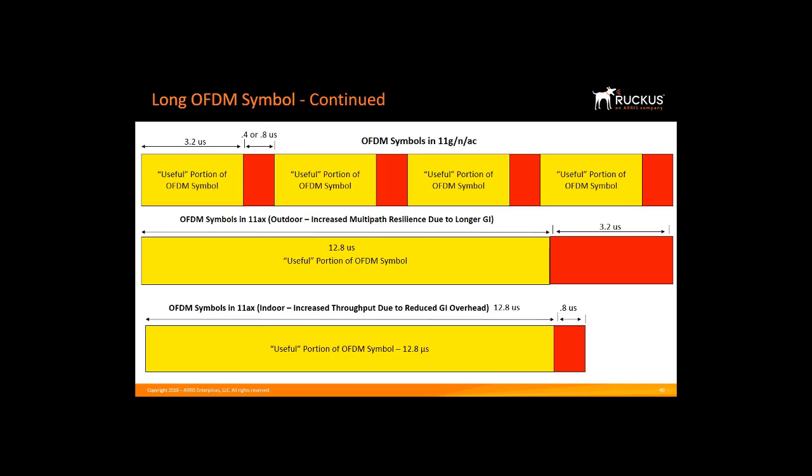Our 11AX APs will adjust this automatically. The guard interval depends on the environment the AP is installed in. Our APs optimize numerous parameters: BeamFlex Plus will try to maximize throughput first, along with determining which modulation coding scheme to use, whether to use multi-user MIMO or OFDMA, and which size of guard interval to use for the environment. When the AP is mounted outside, it will first try 0.8 microseconds to maximize throughput, and if that doesn't work as well, it will try the 3.2 microsecond guard interval.